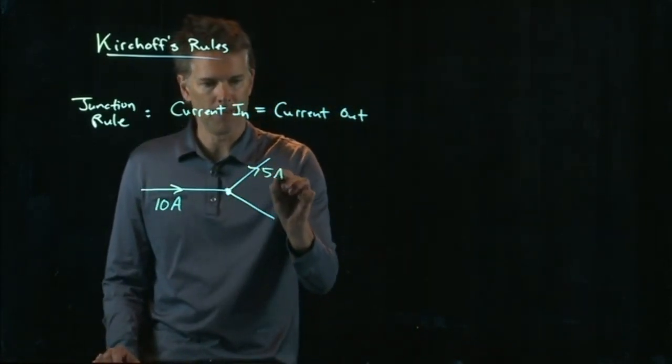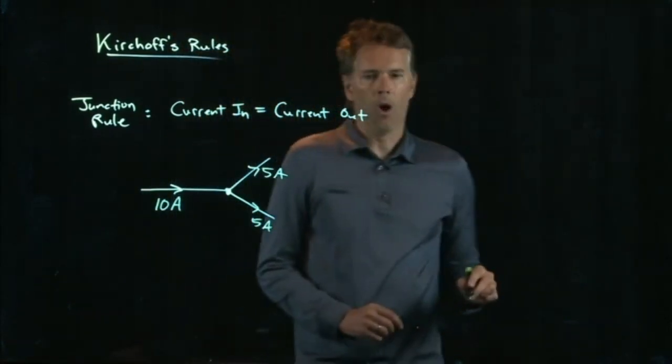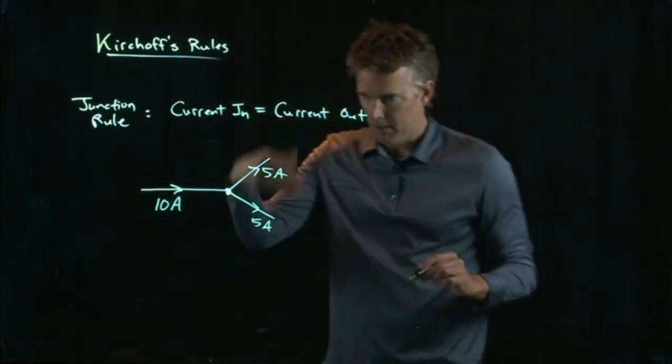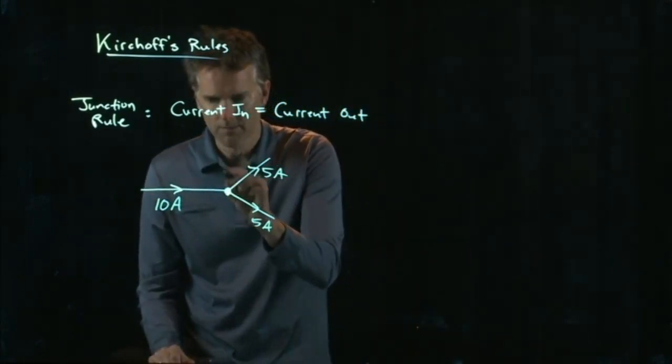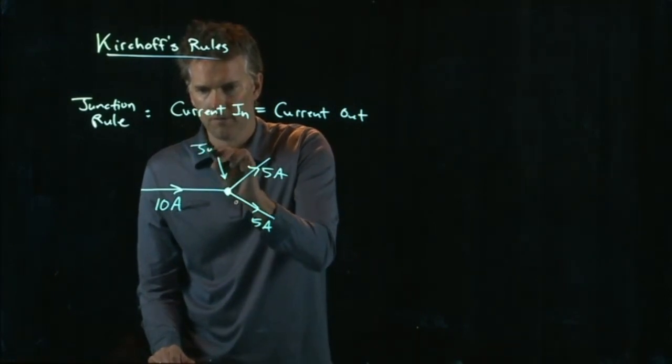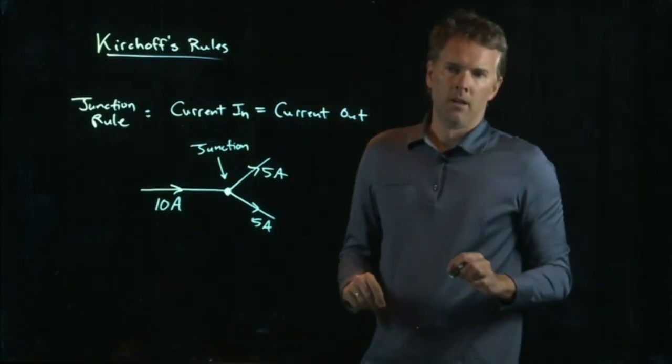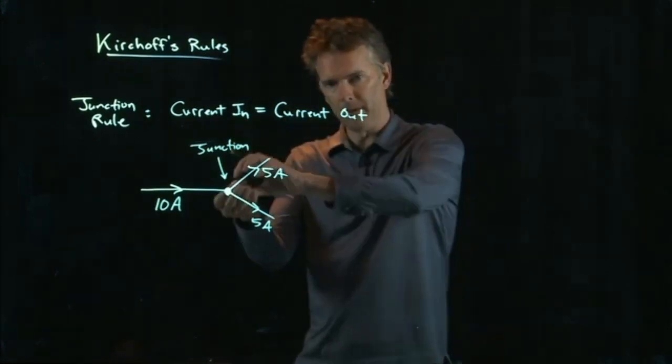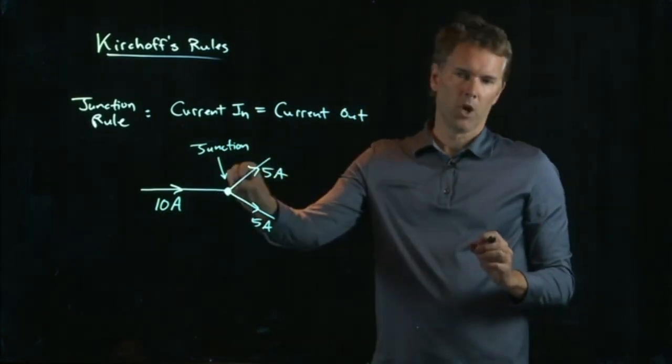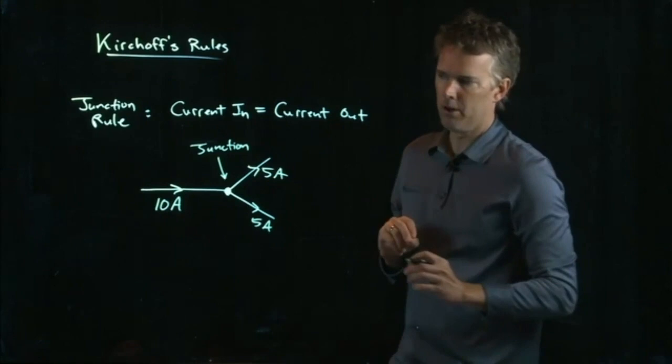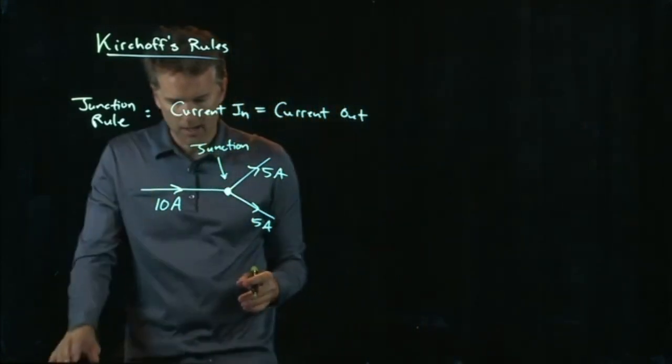So it could be 5 amps going that way and 5 amps going that way, or it could be 7 amps going that way and 3 amps going the other way. Whatever current is coming into the junction has to go out of the junction. Namely, charge doesn't build up there. Charge isn't depleted from there. There's no net buildup of charge, and so any charge coming in has to go out, which means the currents have to match up.